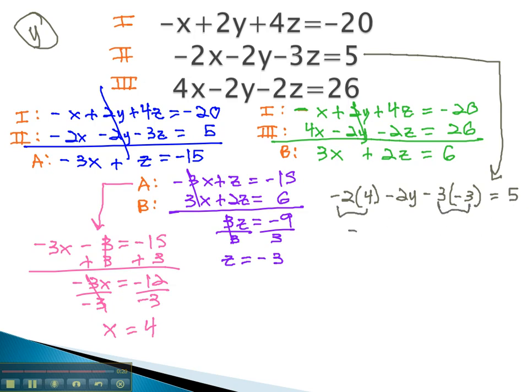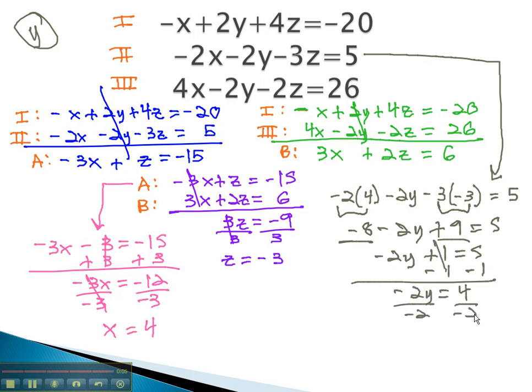Multiplying, we get negative 8 minus 2y plus 9 equals 5. Combining like terms, negative 2y plus 1 equals 5. Subtracting 1, negative 2y is 4. Dividing by negative 2, y is negative 2. We now have our solution.